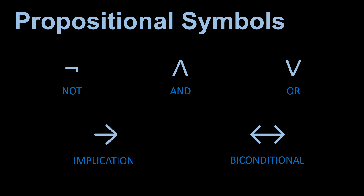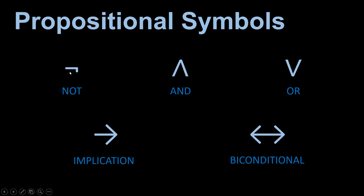The things that do matter are these symbols of comparison. We have: NOT, AND, OR, implication, and bi-conditional. NOT means negating something. AND means both this and this must be true. OR means this or this is true. Implication means they are somehow correlated. And bi-conditional means the correlation of one also affects the other.